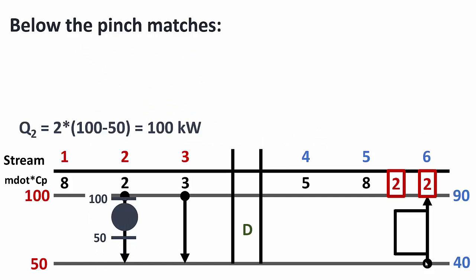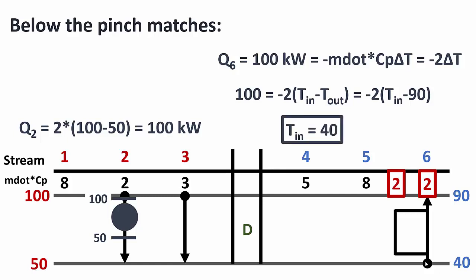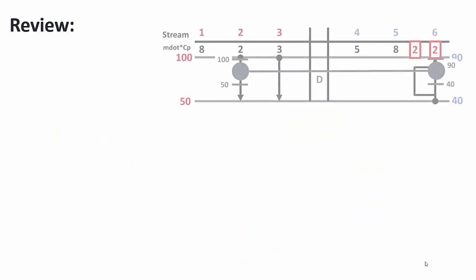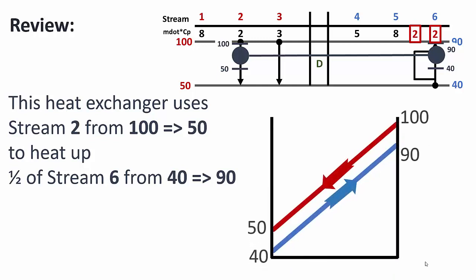Stream 2 has Q = 100 kW. We transfer 100 kW to one half of stream 6: 100 = −2 × (T_in − T_out). The negative sign is important. Starting from the top, we specify T_out = 90°C and solve for T_in = 40°C. This heat exchanger uses stream 2 from 100 to 50°C to heat up one half of stream 6 from 40 to 90°C. The temperature graph confirms the minimum approach temperature is not violated.